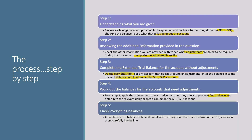Step five: check everything balances. All sections must balance. If they don't, there is a mistake in the ETB. Review carefully line by line — if something doesn't balance, check whether you've accidentally put something in the debit column when it should be a credit. Go back and review all accounts, starting with those that have adjustments. Have you moved all balances over correctly?